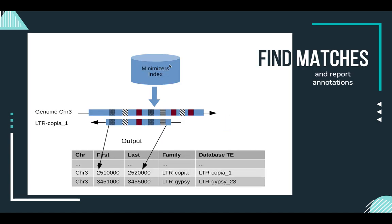We then need to find the matches of our library against the genome that we need to annotate. Here we have one chromosome as an example and one element.